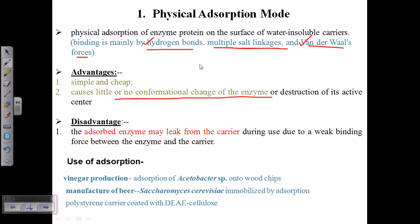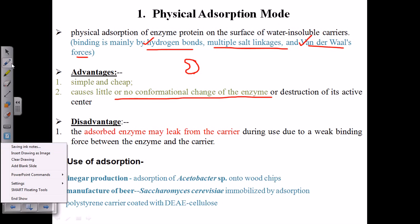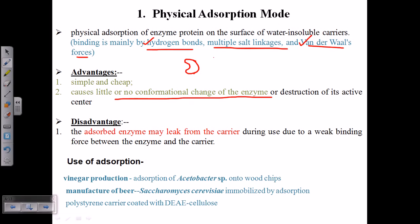Suppose this is an enzyme, let me change the color. This is the matrix. It's simply surface-to-surface interaction, so no change in this interaction is happening. It's a very weak interaction between the enzyme and the surface of the matrix or carrier.